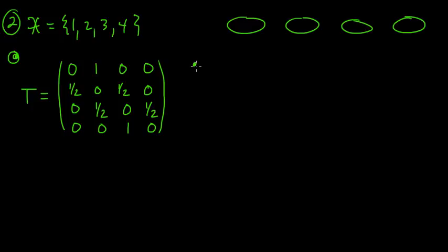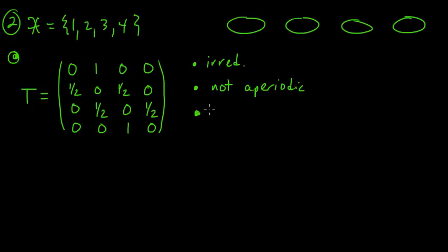Let's think about those properties. We had irreducibility — is it irreducible? In fact, it is. It's pretty easy to check irreducibility. But it is not aperiodic — or you might say, it is periodic. Roughly the reason why is because if you start out at state one, then at odd times you're always going to be in state two or four, and at even times you're always going to be in state one or three. And that results in failure of the aperiodicity property.